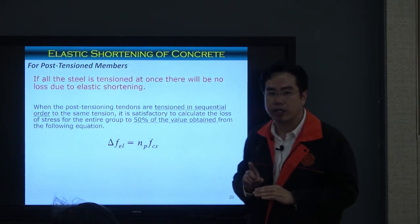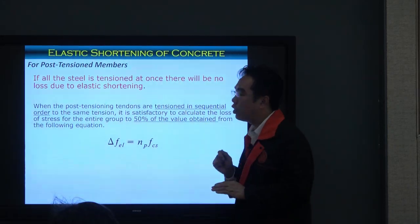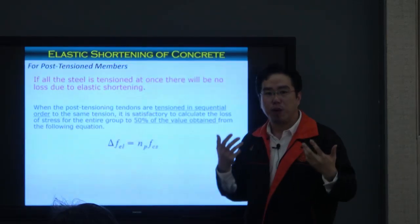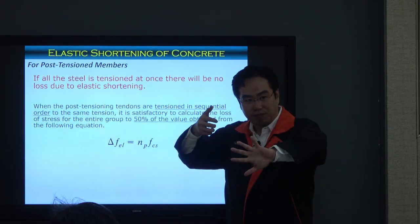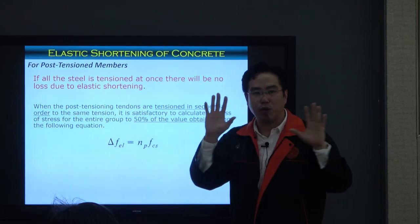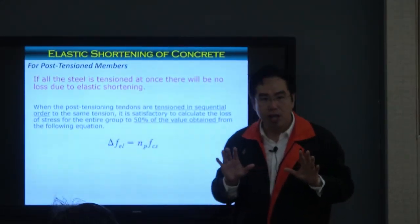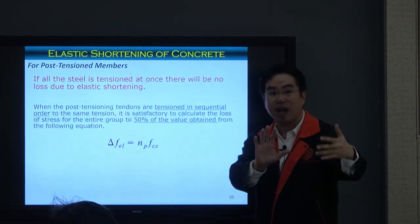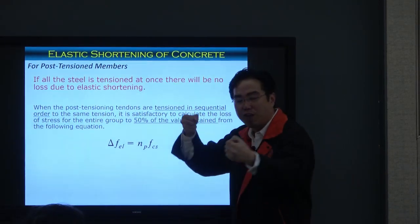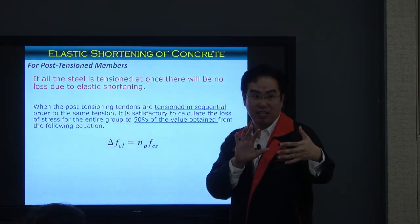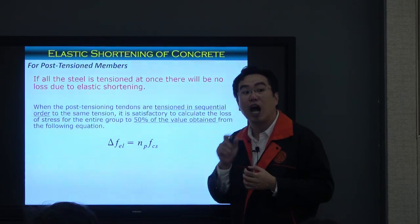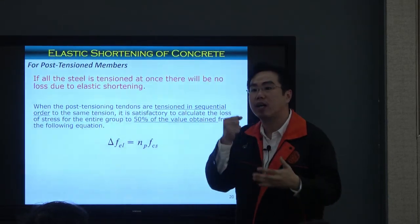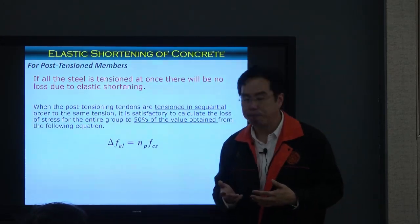In post-tension, if you pull all tendons at the same time, there is no elastic shortening loss. Elastic shortening loss in post-tension occurs only when you make sequential pulling. For example, with 10 tendons, if you pull 5 first and release, those 5 do not suffer elastic shortening. But when you pull the next 5, you add compression force to the member and the first 5 tendons become shortened. So the pulling of the later set of tendons affects the former set, and you need to calculate this step by step.